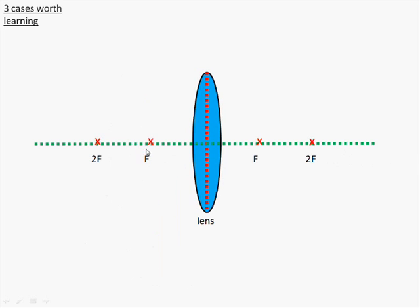So there are three cases worth learning about. And I've demonstrated those visually. Case number one is when an object is outside of the focal length, but more than twice the focal length. So in this diagram here, I have the central line of the lens. The focal length of this lens is about five centimeters. So ten centimeters will be two times the focal length. And this object is more than two times the focal length away.